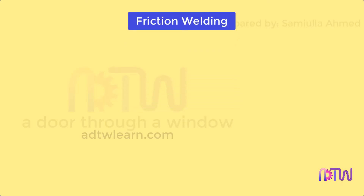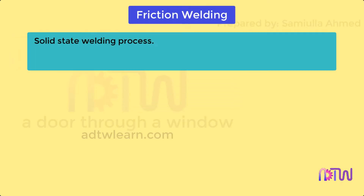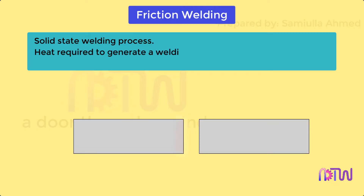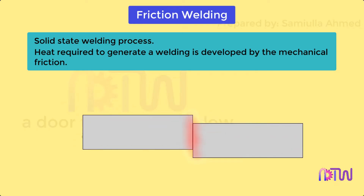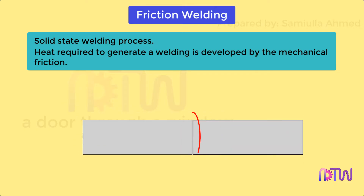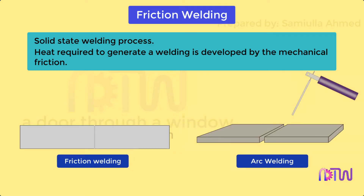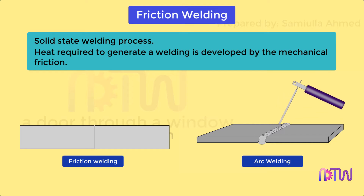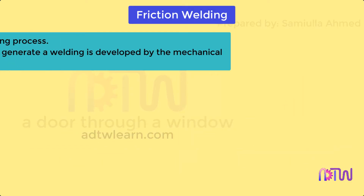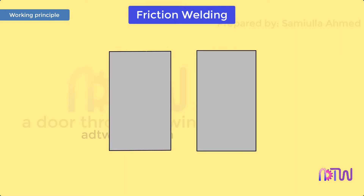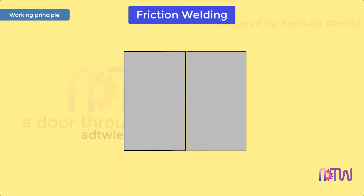Friction welding is a solid state welding process in which the heat required to produce a weld is developed by the mechanical friction generated at the interface due to the relative motion of the metals to be welded together. The resulting bond is as strong as the parent metal. Unlike arc welding, friction welding does not make use of filler metal, and the process can be automated.